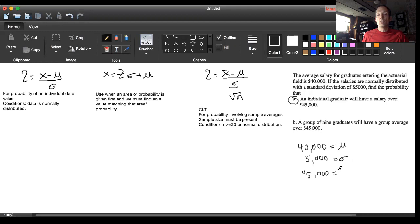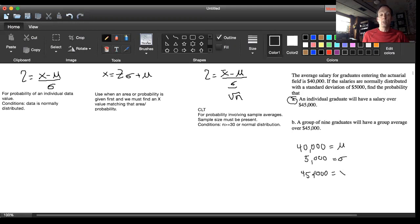At $45,000, they're talking about an individual graduate, so that tells me that $45,000 has to be my X value. And in notation, what I'm trying to find is the chance that X will be greater than $45,000.